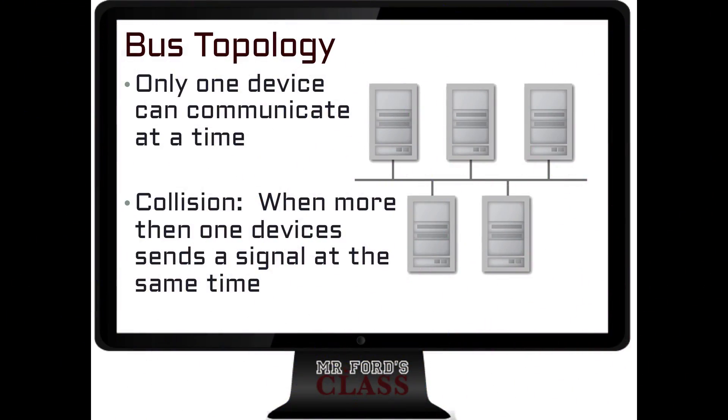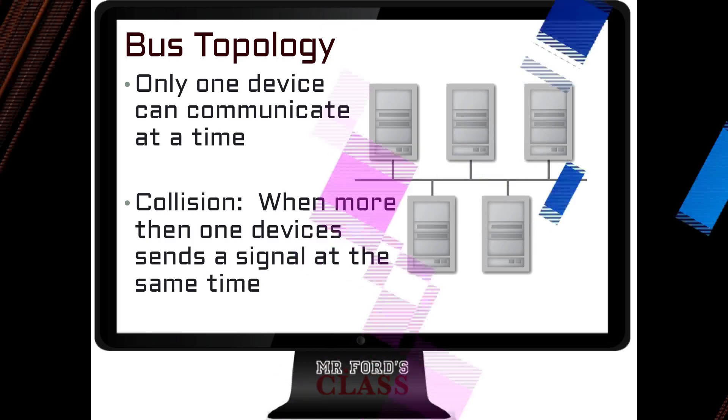Only one device can communicate at a time. If two or more devices try to communicate at the same time, we wind up with something known as a collision and then nothing gets through — it all comes to a crashing halt. We'll worry about that later, but understand on a bus, one device can communicate at one time if it wants to get the signal out there successfully.